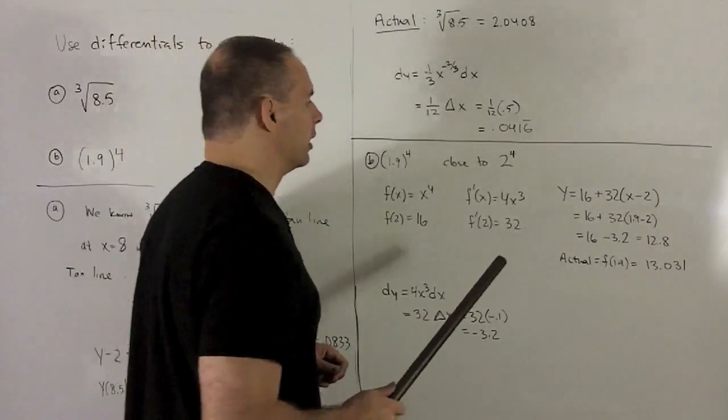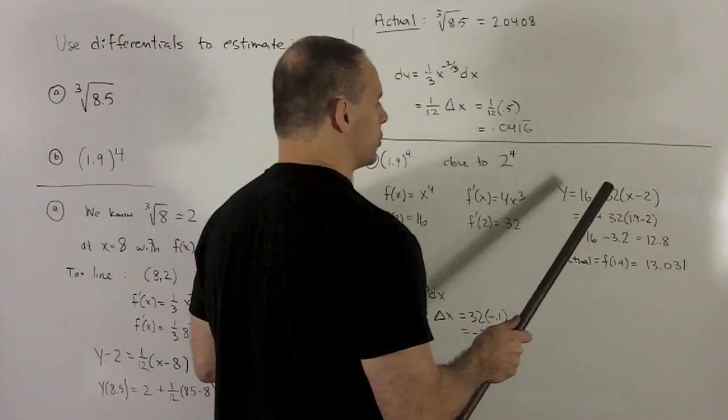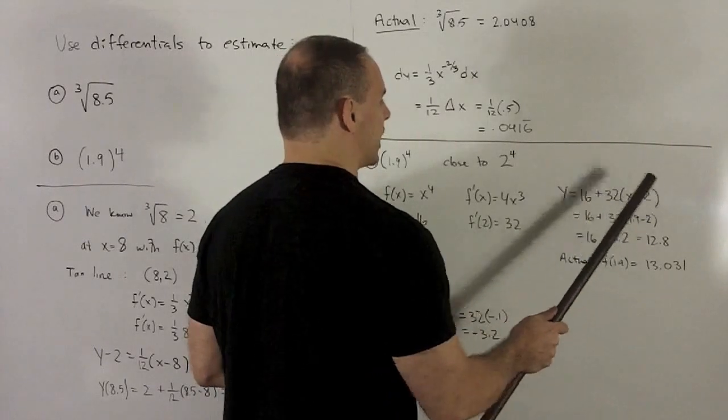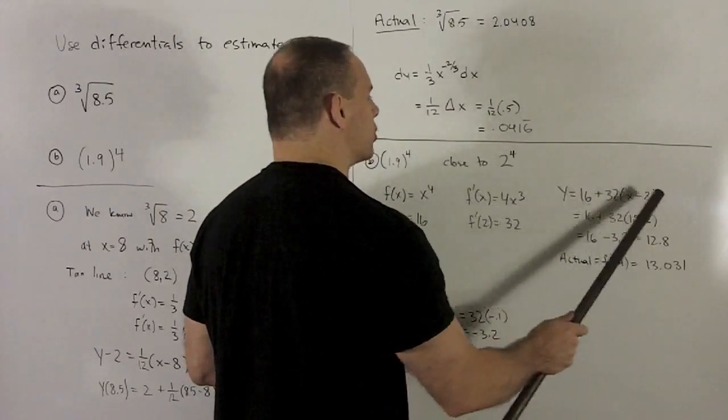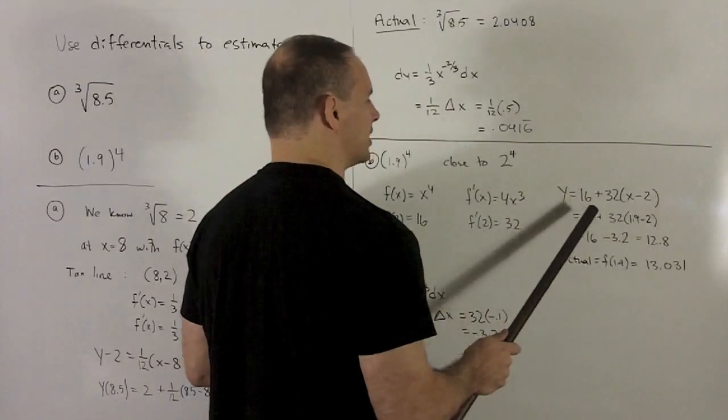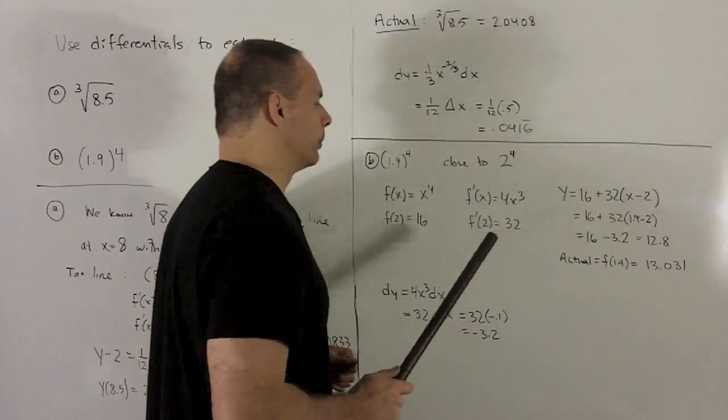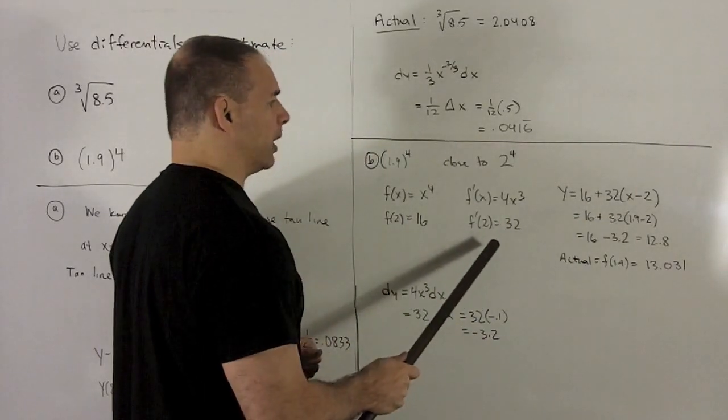So what's our tangent line? y minus y0 equals slope times (x minus x0). So we put our numbers in: we have (2, 16), and our slope is 32, because it's the derivative evaluated at 2.